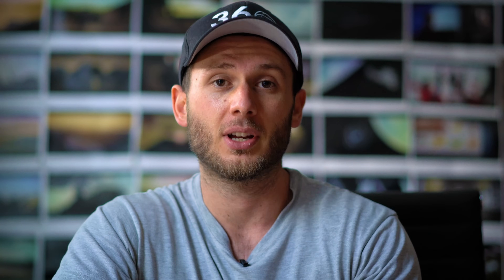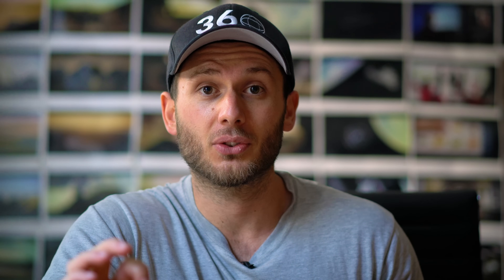Traditionally when you edit 360 photos inside of Photoshop, they produce all kinds of errors when editing the stretched-out equirectangular 2x1 photo, and that is bad. So there's a way of editing your photos that will make your changes look native within that 360 environment, and it doesn't take long at all.